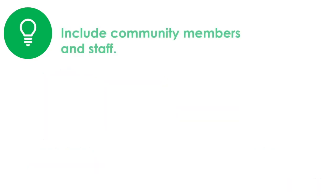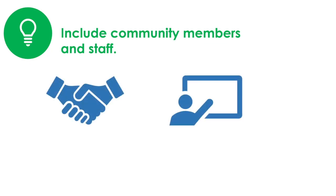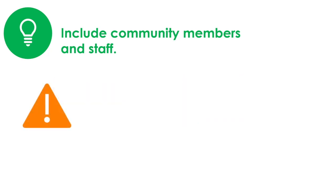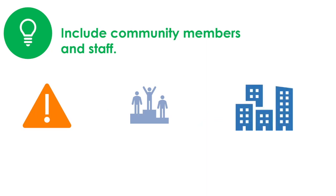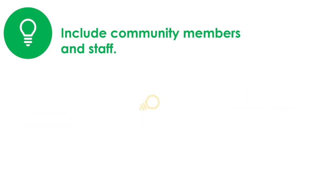Because you are developing your roadmap during this step, it is important to include community members as well as program staff. They can help identify potential barriers to the activities you're planning and point out strengths of the target population and the broader community that you can use to support your work. They can also help to point out contextual factors that might influence program success. For example, if a similar program had been implemented unsuccessfully in the past, community members may be wary of your program. Knowing this ahead of time could lead you to select a different approach or plan for additional outreach activities.